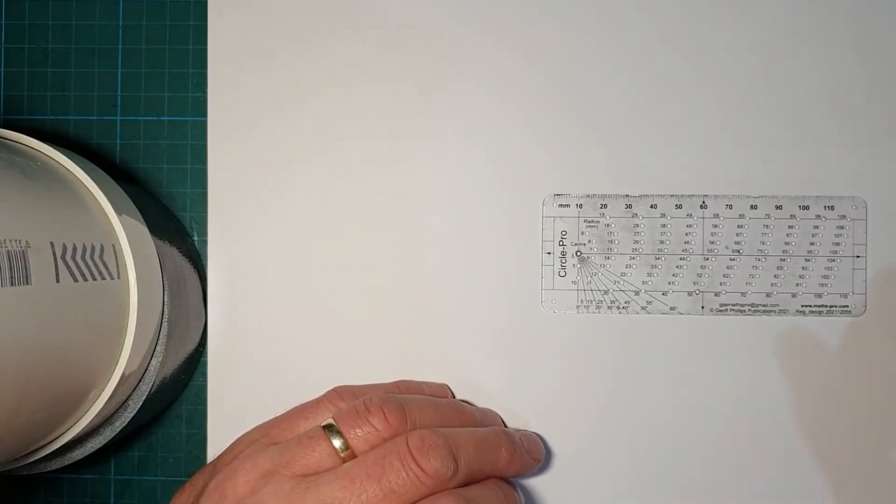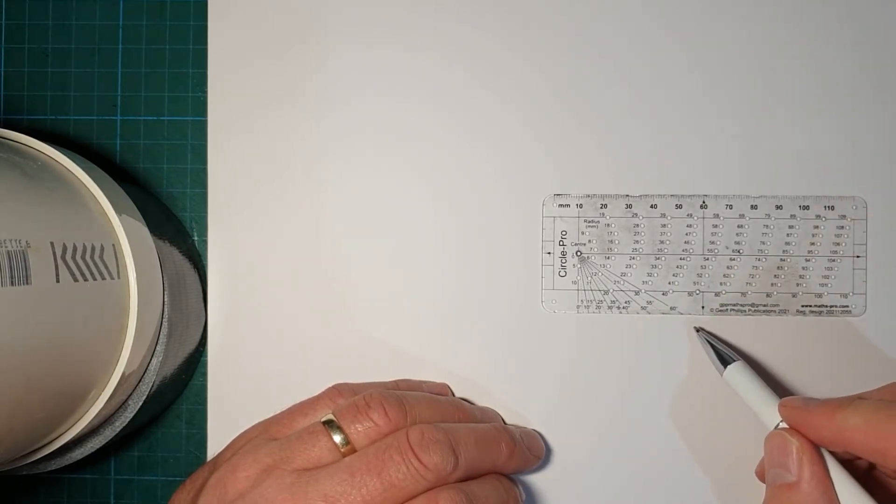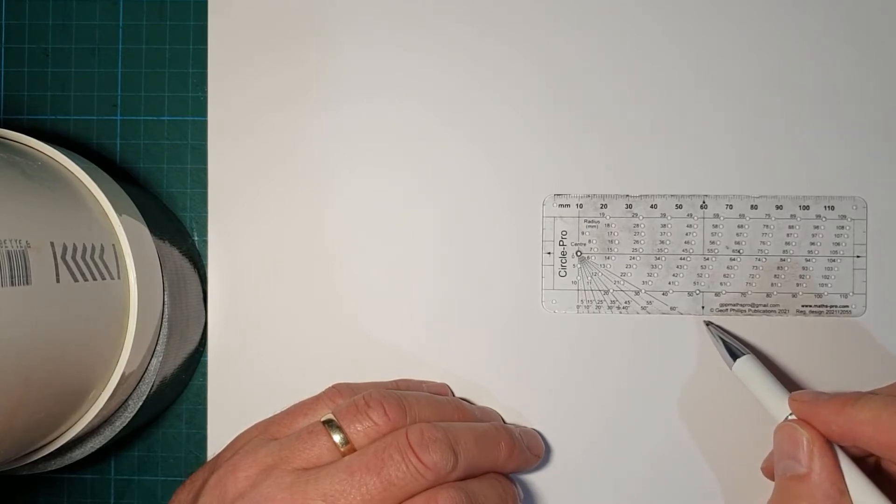Welcome to another CirclePro video. In this video I'll be showing you how you can use the angle scale on CirclePro to draw a pentagon. You might recall that a pentagon requires angles every 72 degrees around the circumference of a circle if you're using that method.